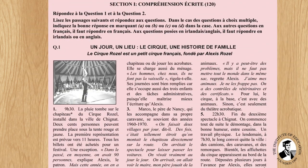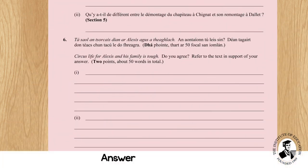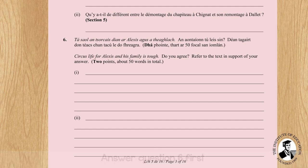What you are going to do is read your headline. So: un jour, un lieu, le cirque — this is about the circus, this is about the family history. Read your headline, then go straight into question 6. Question 6 is asked to you in English and that might give you just a little hint into the text. Circus life — circus life for Alexis and his family is tough. Do you agree?